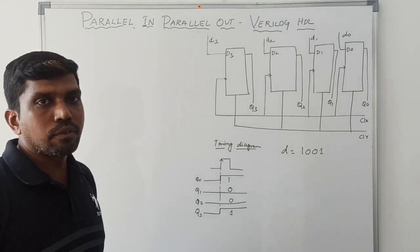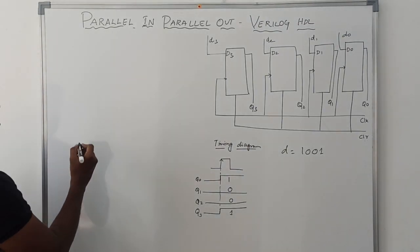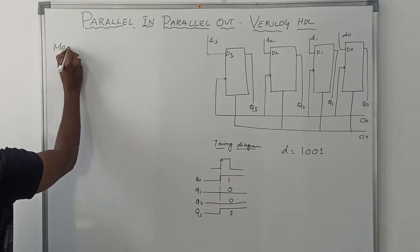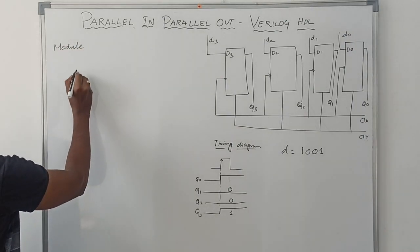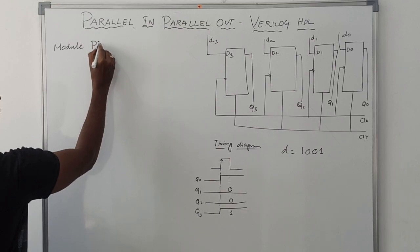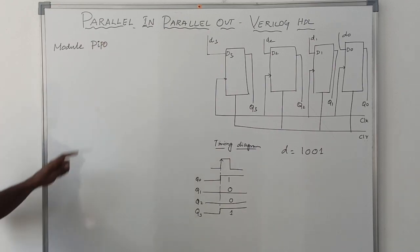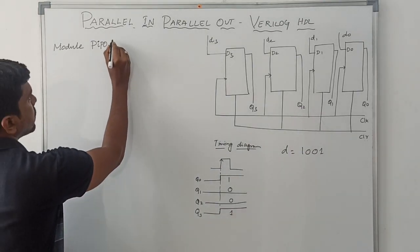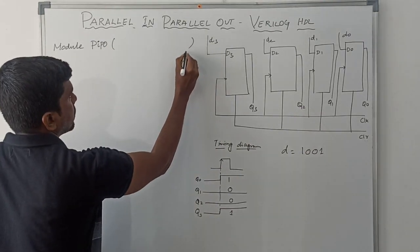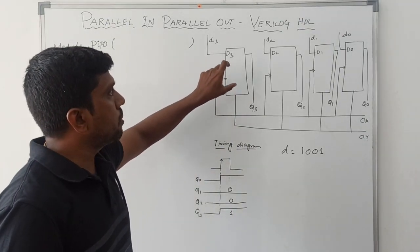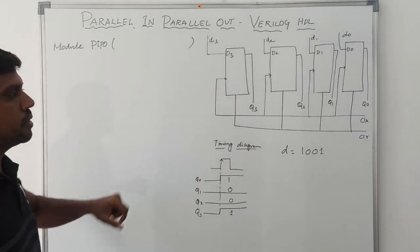Now I am going to write the Verilog HDL program. First you write 'module', then the module name 'PIPO' — PIPO represents parallel-in parallel-out. Within the brackets, we mention what variables are used in the block diagram: clock, clear, D, and Q.